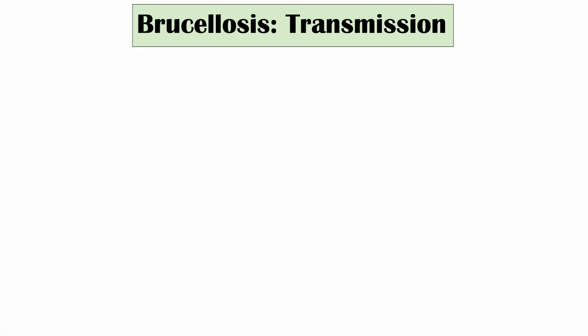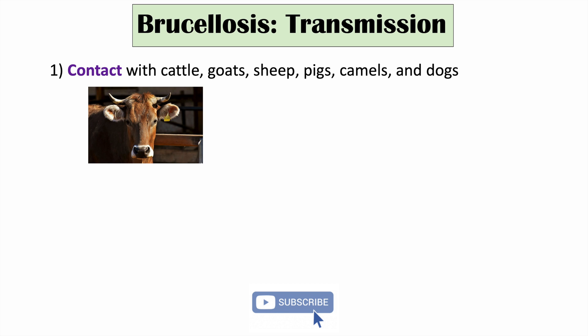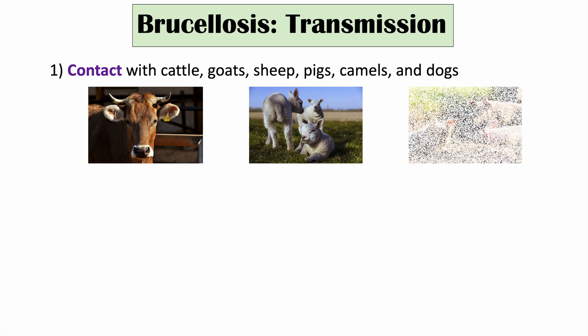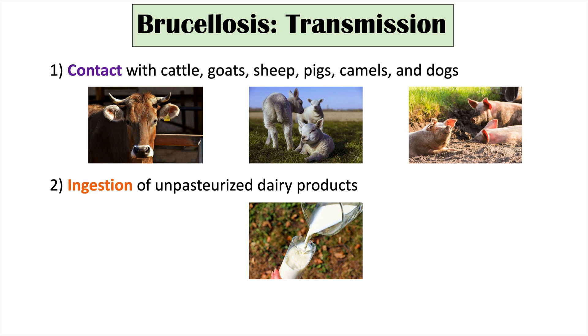How is brucellosis transmitted? It comes from animals, including cattle, cows, goats, sheep, pigs, camels, and even dogs. We can also get brucellosis through ingestion of unpasteurized dairy milk. If the milk has not been pasteurized properly — essentially heated to kill the bacteria — you can get Brucella infection that way as well.